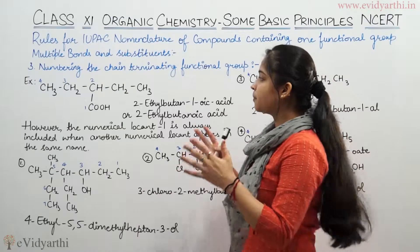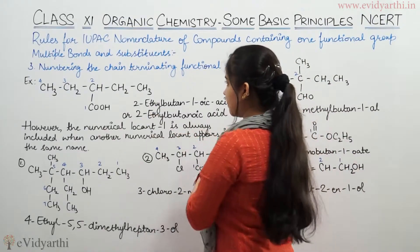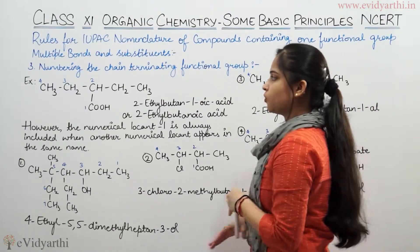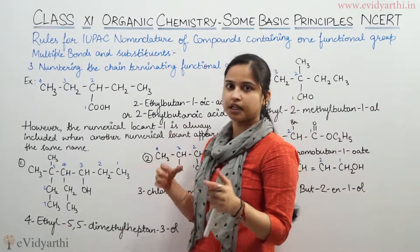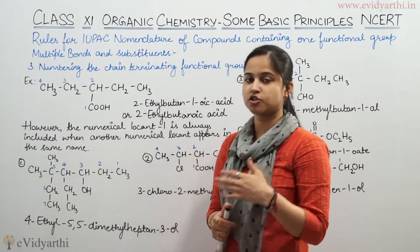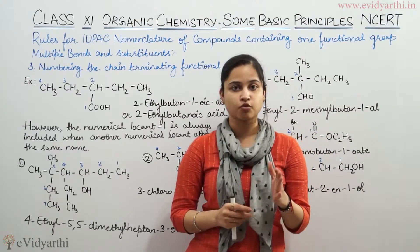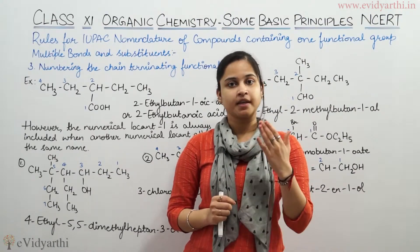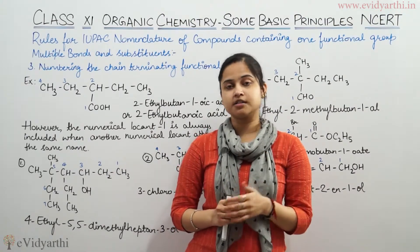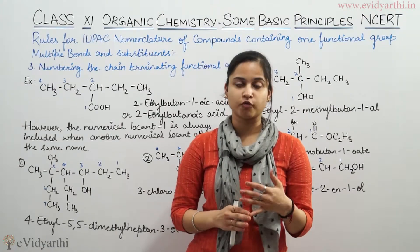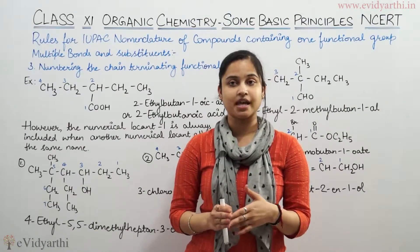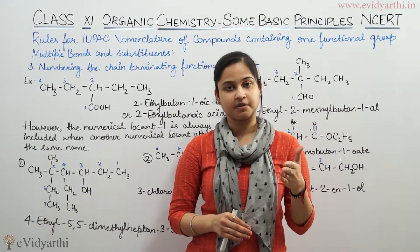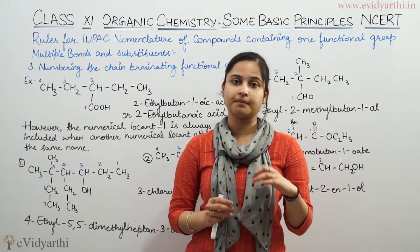I have told you about this rule regarding numbering the chain-terminating functional group. In this rule, we will start numbering from the functional group itself. If we are having a CHO group, a COOH group, or a CN group, then we will start numbering from that carbon itself. Therefore, we will also include the functional group carbon in our numbering.